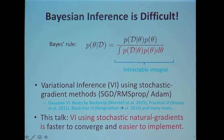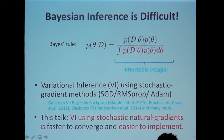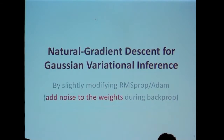In this talk, I'm going to make a case for natural gradient descent for variational inference, as opposed to doing standard gradient methods. We know that natural gradient descent is expected to converge faster, but my hope is to also convince you that it's easier to implement when applied to variational inference.